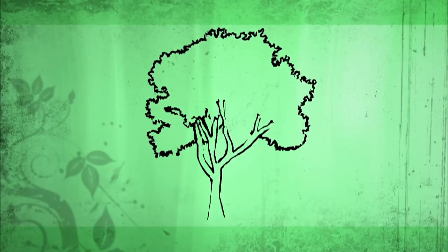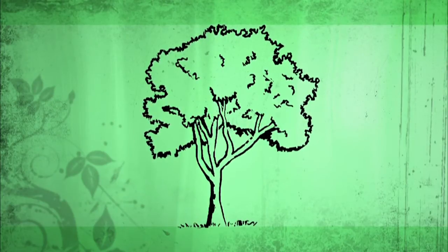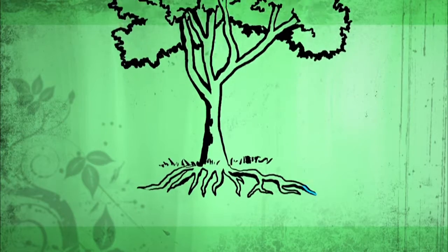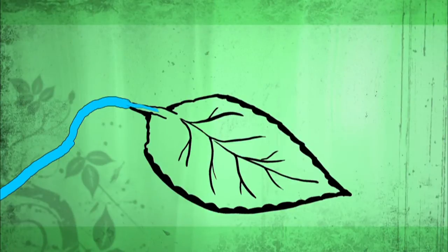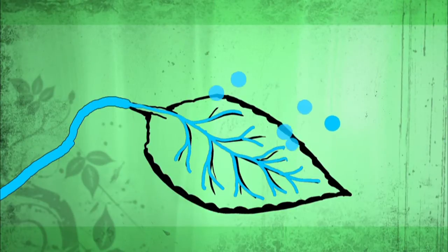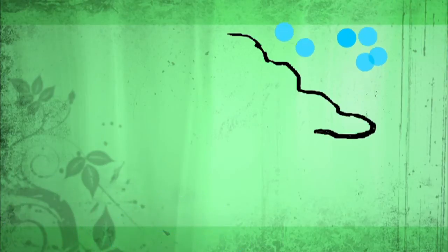Plants also play a role in the water cycle. They absorb moisture through their roots from soil and transport it to their leaves for photosynthesis. There, it leaves the surface of the leaves as water vapor back into the air.